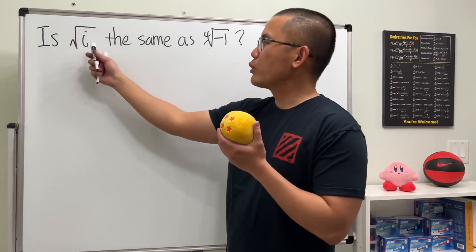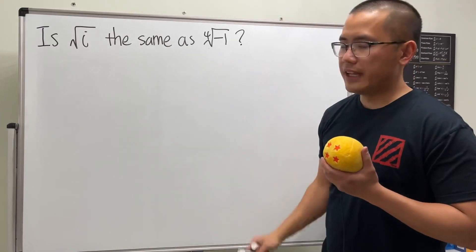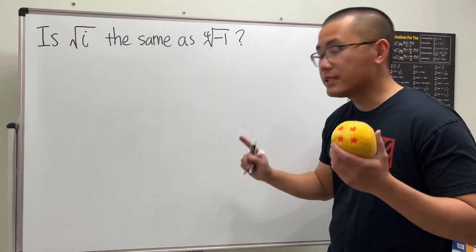I just want to talk about this real quick: is square root of i the same as the fourth root of negative one? The quick answer is no, but let me show you